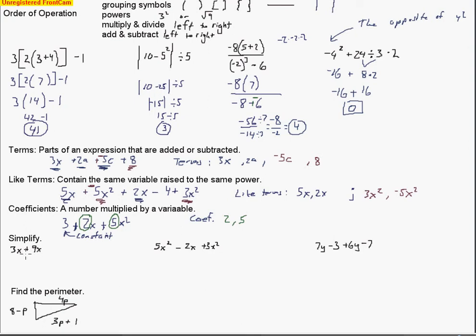The reason we need to know this is so we can explain what we're doing when simplifying. To simplify, we combine like terms. I see 3x and 9x — those are like terms, so I combine them. Really I'm using the distributive property: I'm adding the coefficients 3 and 9, and that sum gets multiplied by x. So that gives me 12x.